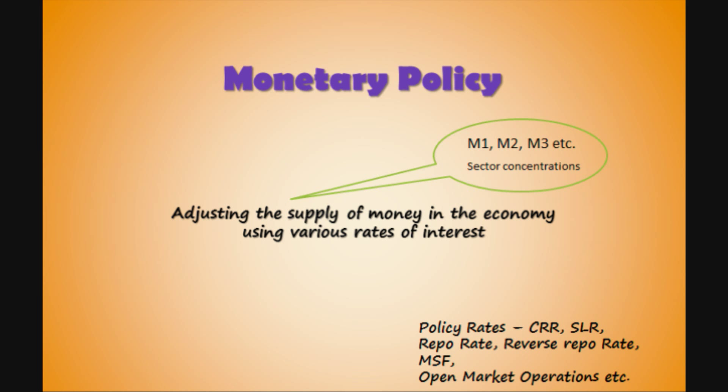The aim of policymakers with monetary policy is to alter the allocation of money in the system to bring a favorable change in outcomes like inflation and the others mentioned. The tools used are CRR and SLR, which stand for Cash Reserve Ratio and Statutory Liquidity Ratio respectively. There are others like repo rate, reverse repo rate, marginal standing facility, and open market operations, which will be discussed in the next video.